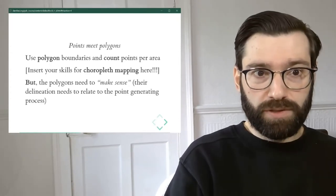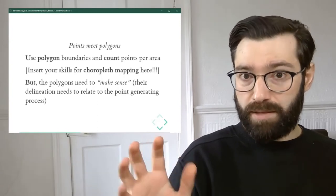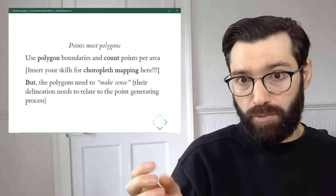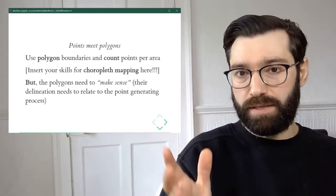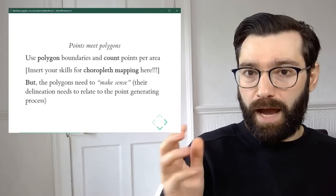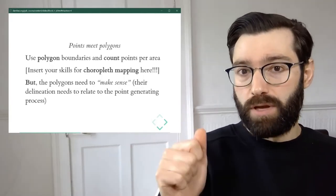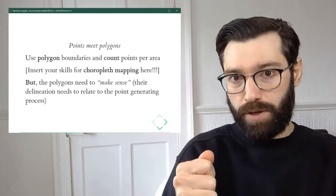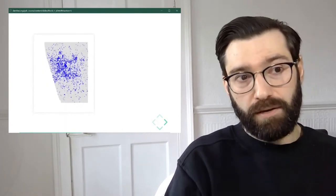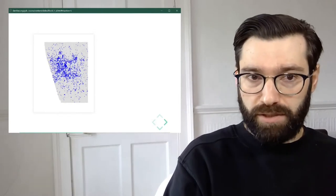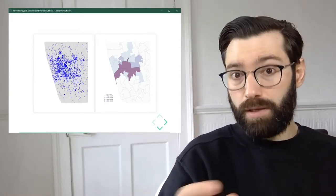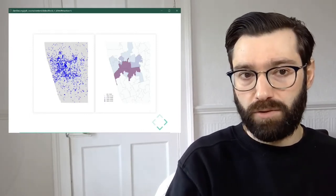However, there are some drawbacks to this approach. Most of them relate to the idea that the polygon layer we use to aggregate our point dataset needs to make sense — or in other words, the delineation and segmentation of space that this polygon layer brings in needs to be somewhat aligned with the underlying process that generated the point pattern. We need to be able to match the process that generates the points with the geography that the polygon layer encapsulates. Here is an example where we have the same point dataset aggregated at the MSOA or LSOA level — that is, at a polygon geography provided by the census or Office of Statistics.